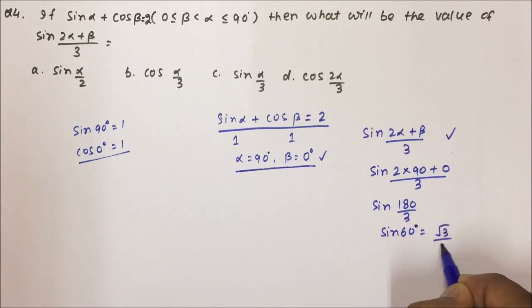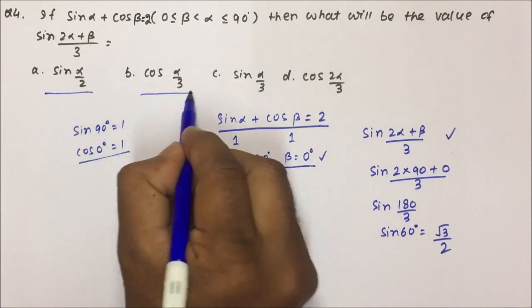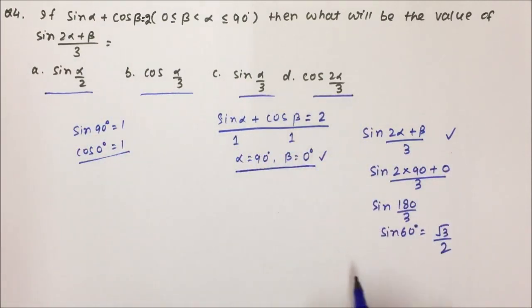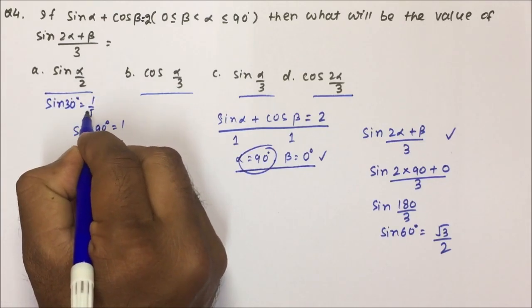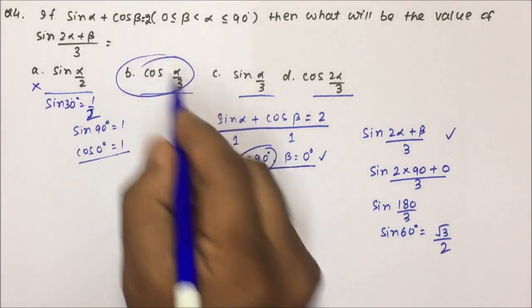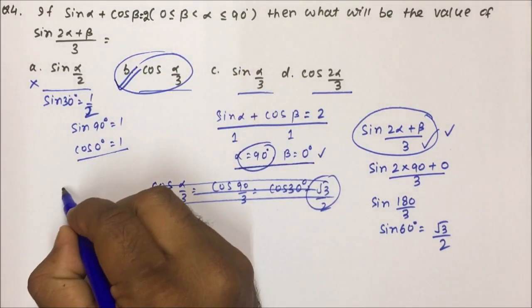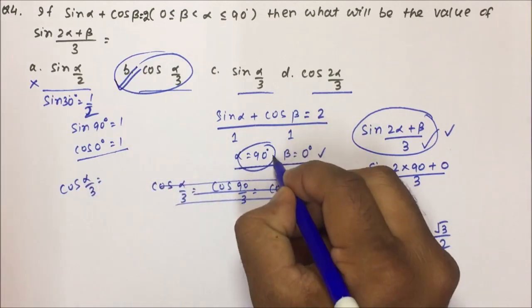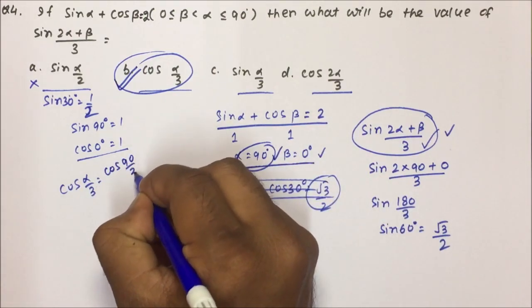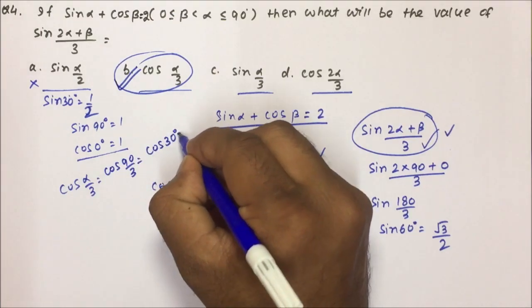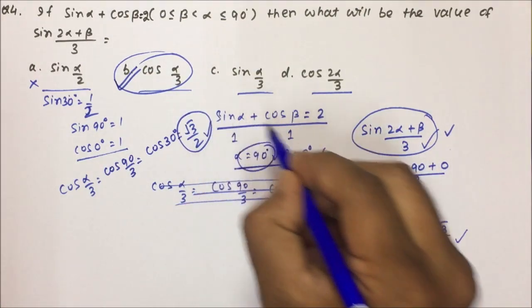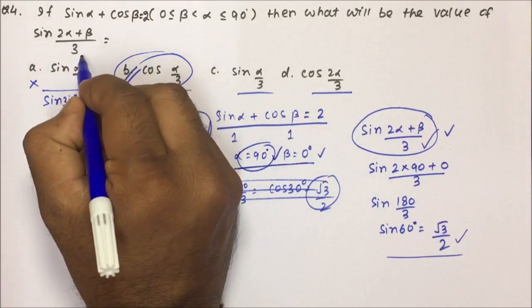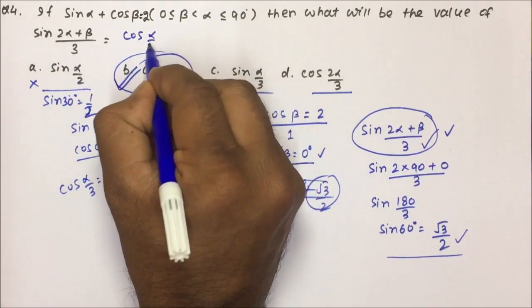Now we check the options using hit-and-trial with α = 90°. Option A: sin(α/2) = sin 30° = 1/2 — not correct. Option B: cos(α/3) = cos 30° = √3/2 — this matches! So sin(2α + β)/3 = cos(α/3). Using the hit-and-trial method with short tricks, we can solve this very fast; otherwise you would have to use formulas and spend much more time.